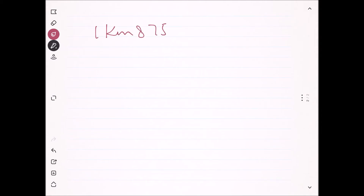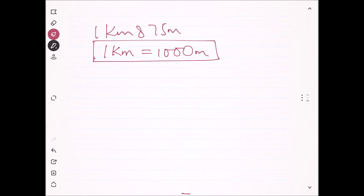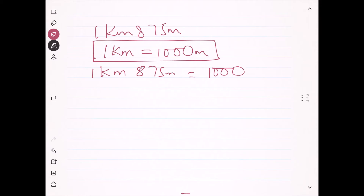First we will convert kilometers to meters so that there is ease in doing the question. We know the relation that one kilometer equals one thousand meters. So one kilometer 875 meters will be equal to 1000 plus 875 meters, which is 1875 meters.